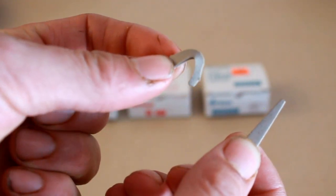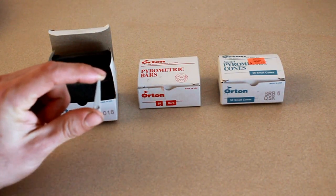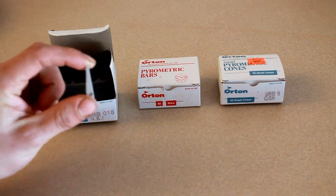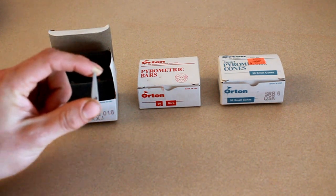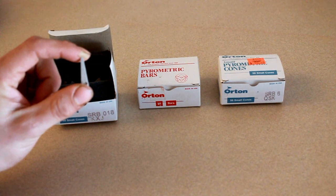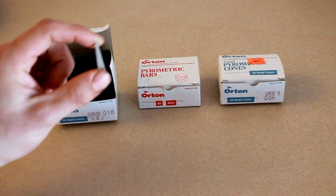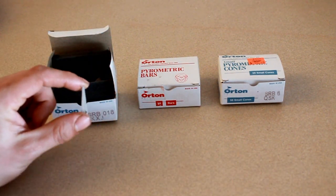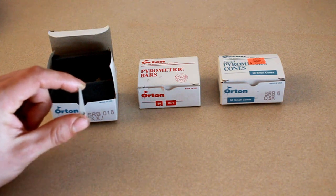Now, each and every one of these cones is made of a very specific type of chemical and material. And each and every material has a melting point. And that melting point correlates to a certain number. And the number on this tells you exactly what temperature this is going to start to melt at.